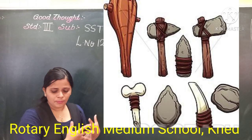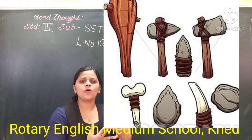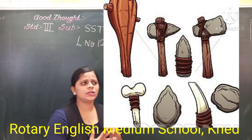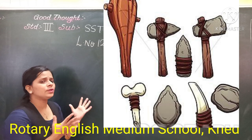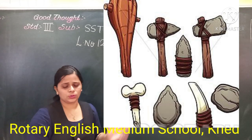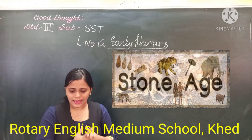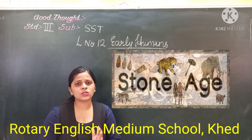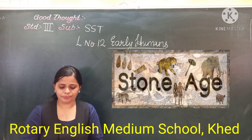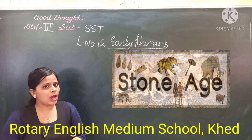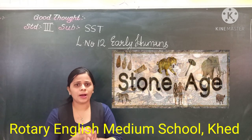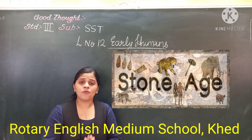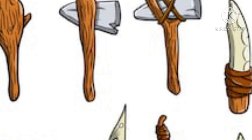Most of the tools were made of stone. You can see in the picture — most of the tools were made with stone. That is why this age was called the Old Stone Age. I hope you have understood about the tools — what tools they used in the earlier days and how they developed their tools.